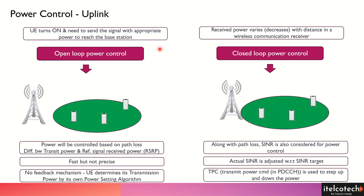Hi, let's understand the power control in 4G LTE. We are going to discuss the power control mechanism in uplink precisely, because in downlink we have a dynamic power control system which can reduce and increase the power as per the requirement, but in uplink it is more precisely focused in 4G so as to reduce the interference in the uplink, which affects the overall efficiency in the radio interface.